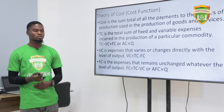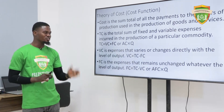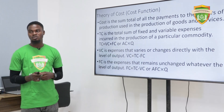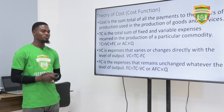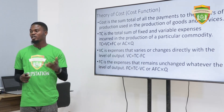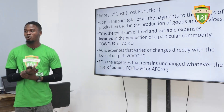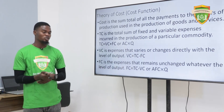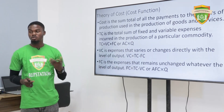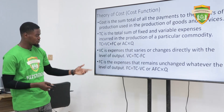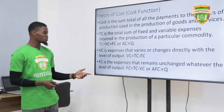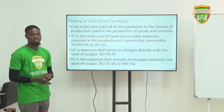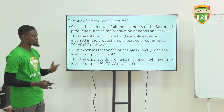Then you have your fixed cost, which is cost that remains unchanged. For your total cost, we have two ways of getting it: either you find the sum of the variable and the fixed cost, or you multiply your average cost by your quantity of output. For variable cost, you subtract your fixed cost from your total cost. For fixed cost, you subtract variable cost from total cost, or multiply average fixed cost by quantity.